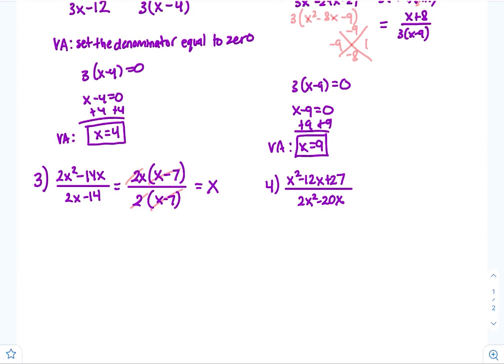After canceling, there is no denominator remaining, so we have no vertical asymptote for number three.